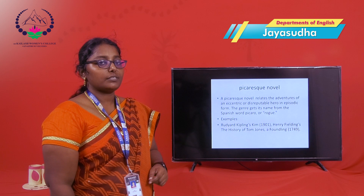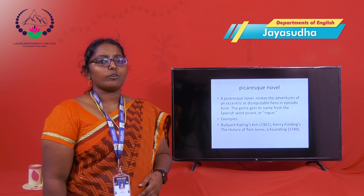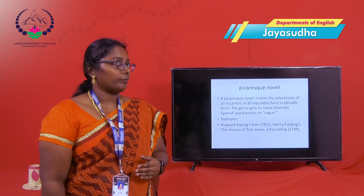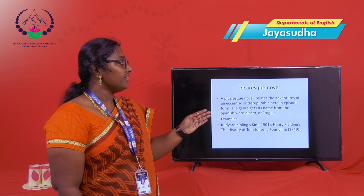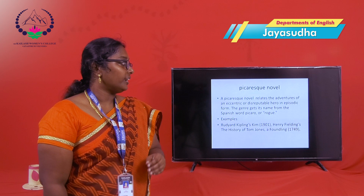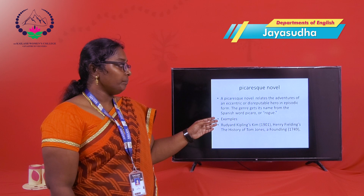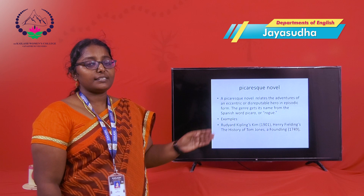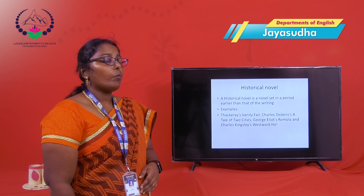What are the types of novels? The first type of novel is the Picaresque Novel. First, know about what a novel is — a novel is considered as a written form of narrative fiction. The Picaresque Novel relates the adventures of an eccentric and disreputable hero in episodic form. The genre gets its name from the Spanish word meaning 'Rogue.' Examples of Picaresque Novels are Rudyard Kipling's Kim and Henry Fielding's History of Tom Jones.